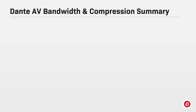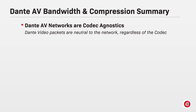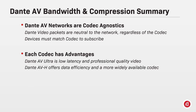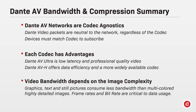Summarizing this chapter: Dante AV networks are codec agnostic — Dante video packets are neutral to the network regardless of the codec, however devices must match codec to subscribe. Each codec has advantages. Dante AV Ultra offers low latency and professional quality video with higher bandwidth. Dante AVH offers data efficiency in a more widely available codec. Video bandwidth depends on image complexity — graphics, text and still pictures consume less bandwidth than multicolored, highly detailed images. Frame rates and bit rates are critical to data usage estimation.